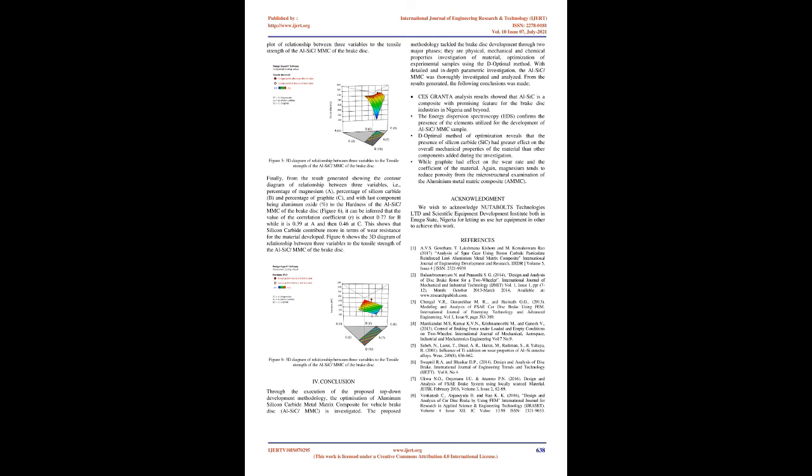Figure 5 shows the 3D surface plot of the relationship between three variables and the tensile strength of the AL6-MMC brake disc. Finally, from the contour diagram showing the relationship between the three variables — percentage of magnesium (A), silicon carbide (B), and graphite (C), with aluminum oxide — on the hardness of the AL6-MMC brake disc (Figure 6), the correlation coefficient r is about 0.77 for B, 0.39 at A, and 0.46 at C, again showing that silicon carbide contributes more in terms of wear resistance. Figure 6 shows the 3D diagram of the relationship between the three variables and the tensile strength of the AL6-MMC brake disc.